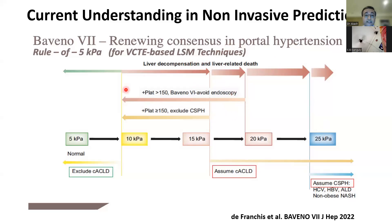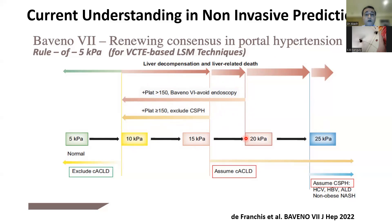Baveno also suggests that patients with platelets greater than 150 and LSM between 10 to 15 can avoid endoscopy for variceal screening — though this is possibly not followed in India. This is a transition to save patients from unnecessary endoscopies. Remember, this is only for patients with compensated cirrhosis and does not apply to decompensated cirrhosis — if somebody has already decompensated, they would get automatic endoscopic variceal screening.